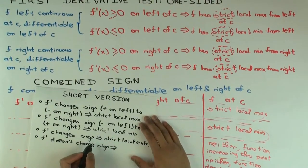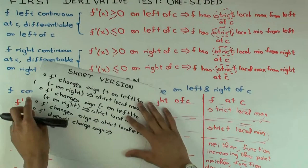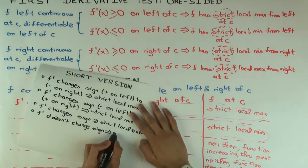And if it doesn't change sign, that means it's one of these cases. What can you say? It's neither a strict local maximum or a strict local minimum. So it's not a strict local extrema.